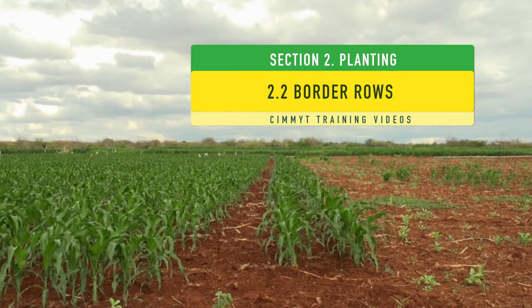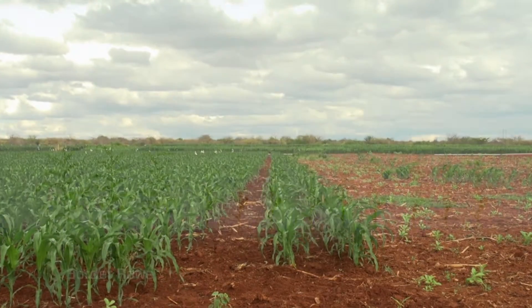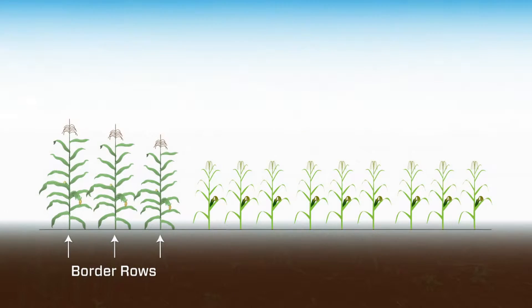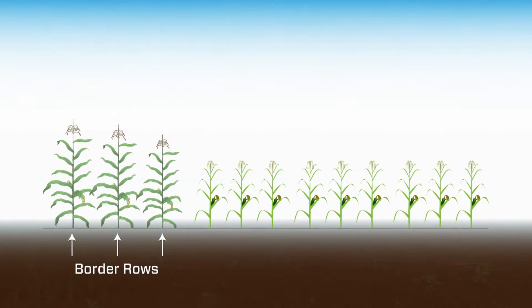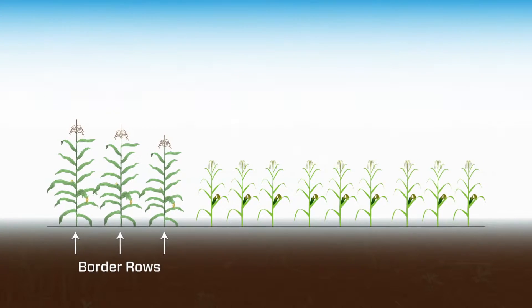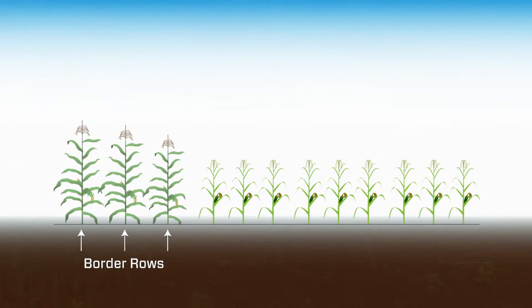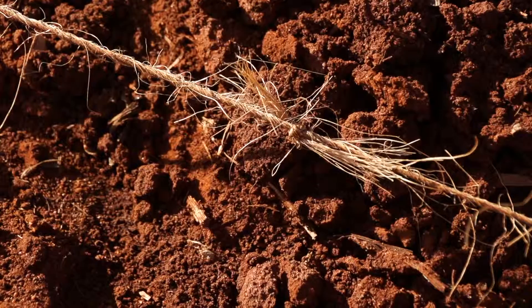A low nitrogen stress screening block should be surrounded by at least two border rows to ensure uniform competition among trial plots.